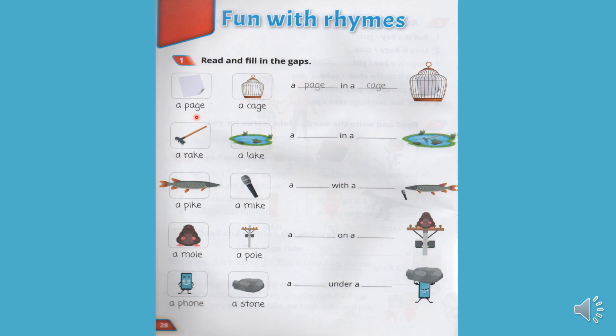A page. A cage. Сторінка. Клітка. A page in a cage. Сторінка у клітці. A rake. A lake. Граблі у озері. A rake in a lake. Граблі у озері.